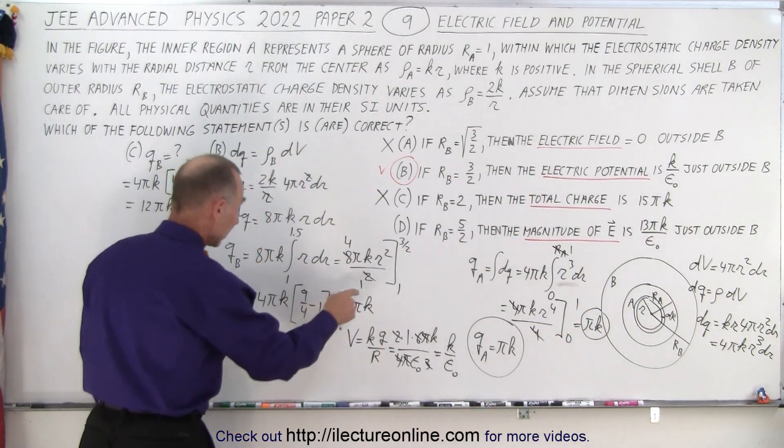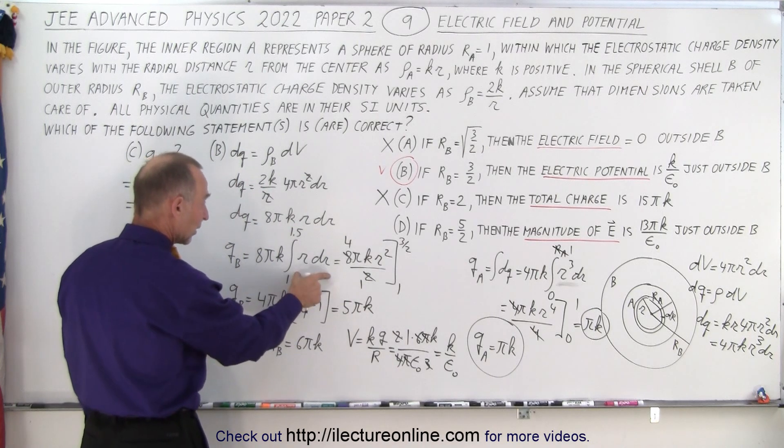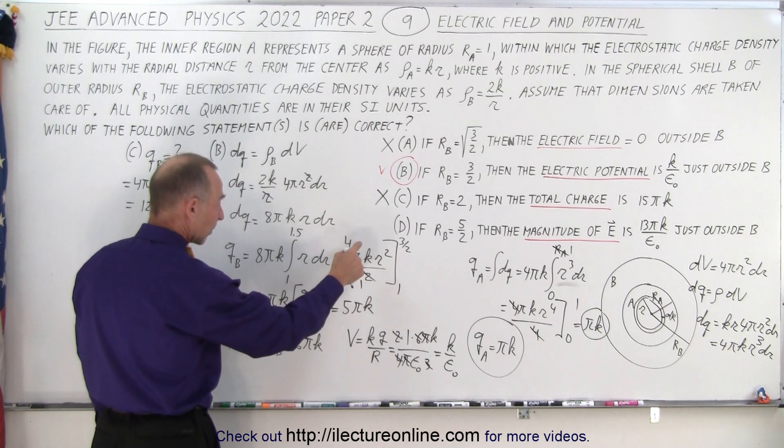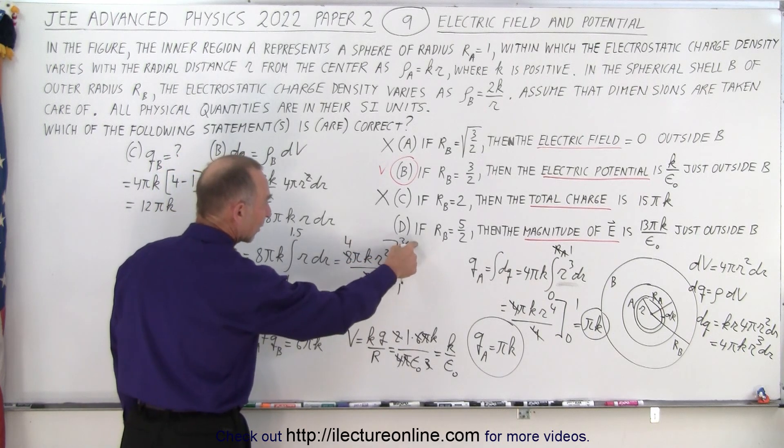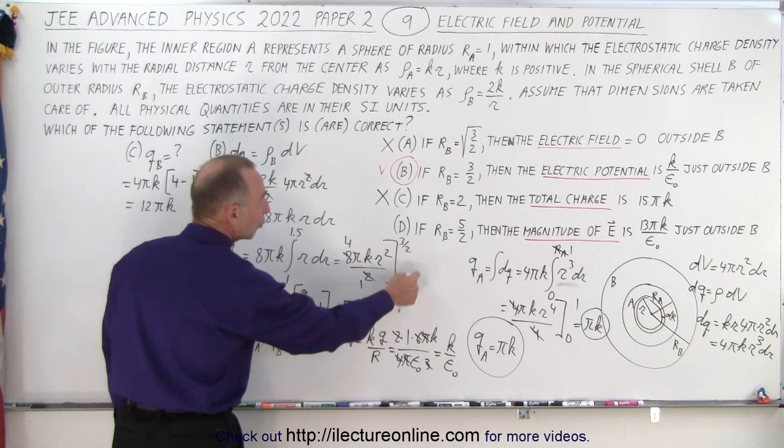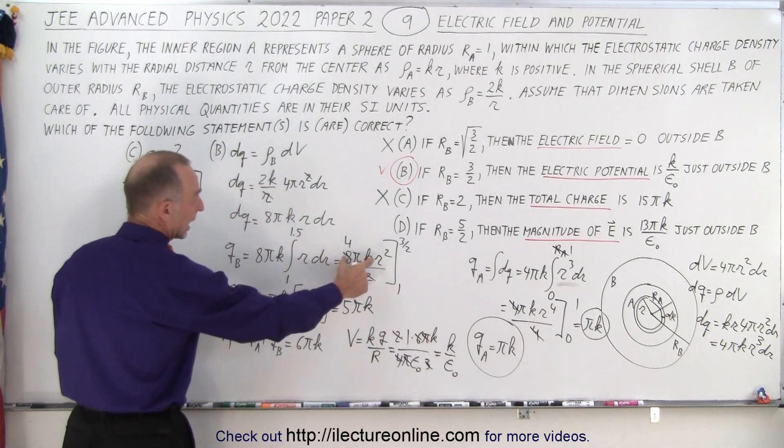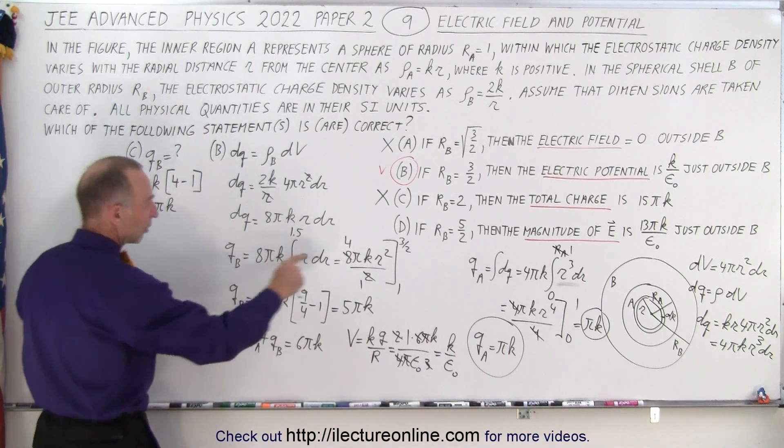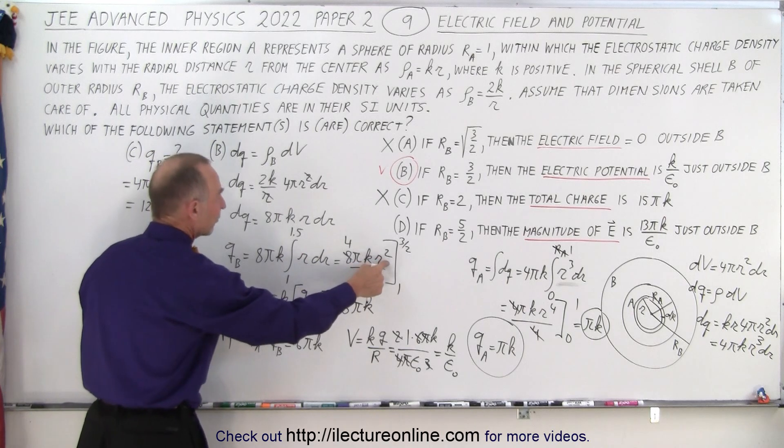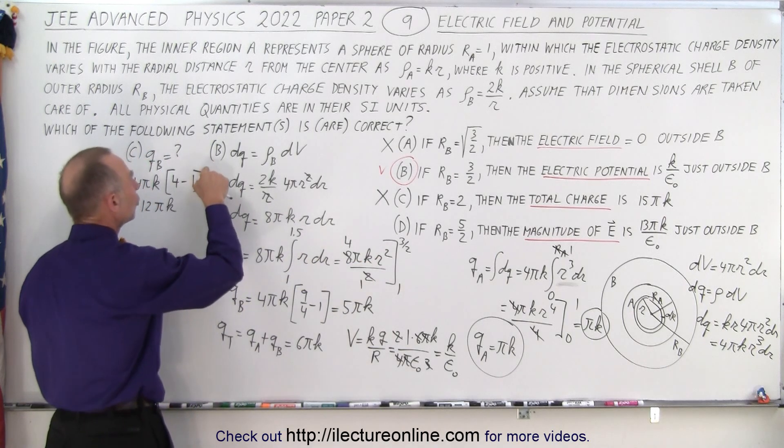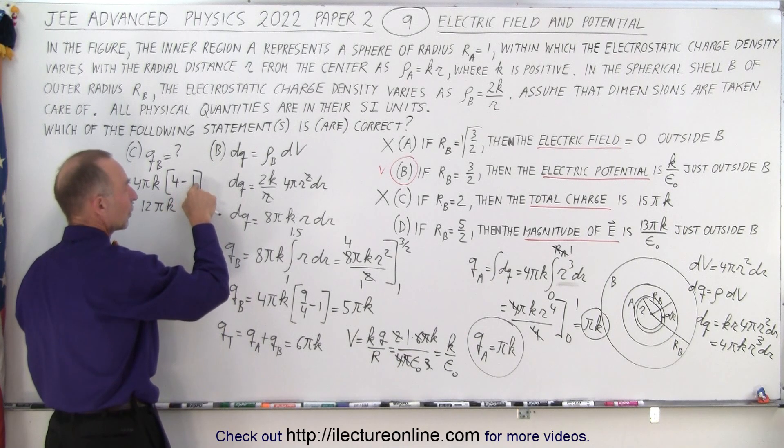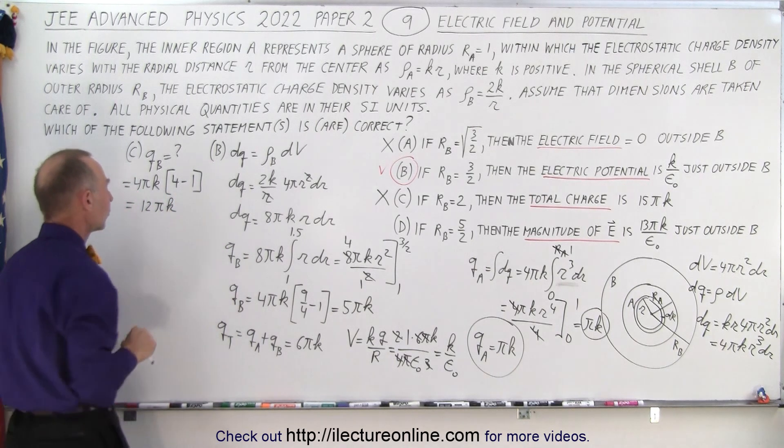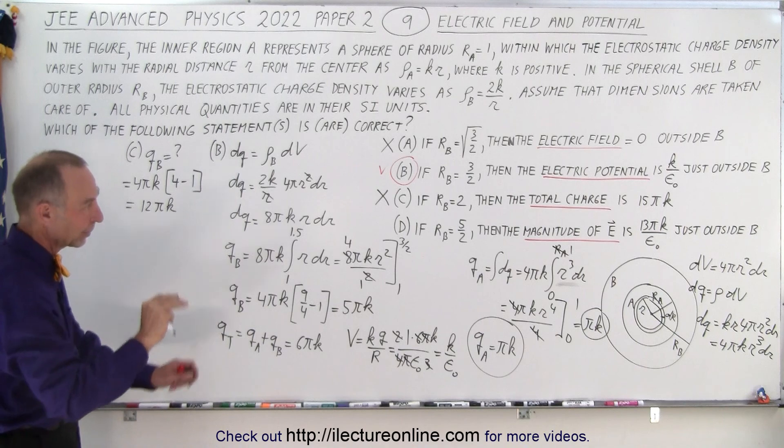So again, what I quickly did was, we know that when we integrate this, we end up with 4 pi k r squared evaluated from 1 to 3 halves for part B, but from 1 to 2 for part C. So we end up with 4 pi k times r squared evaluated from 1 to 2. So r squared when it's 2, that's 4, minus r squared when it's 1, that's 1. So we get 12 pi k, not the right answer.